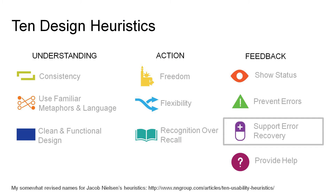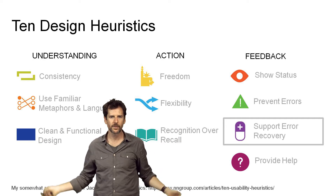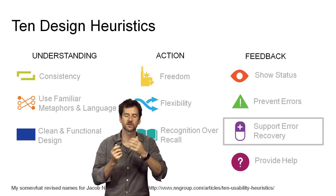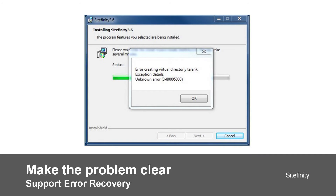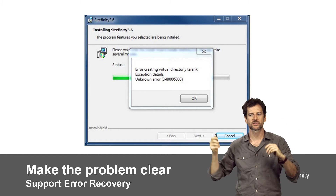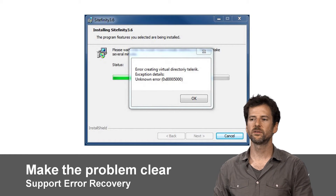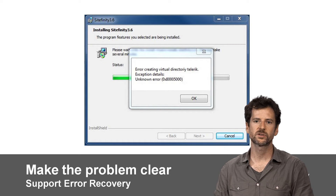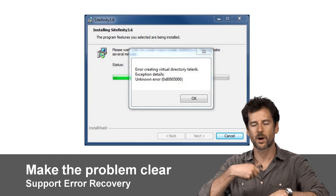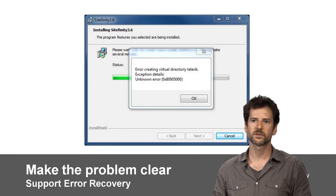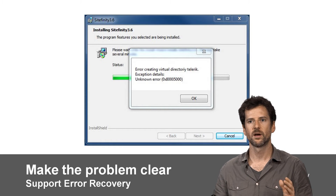Good user interface design and feedback can eliminate probably 90% of user errors or more, but there's no way to remove 100% of them. So when errors do happen, it's important to make the problem clear so you can help the user recover. Here's an error — 'error creating virtual directory' with an unknown hex error code — that in my opinion is not very helpful. It's slightly better than it looks because people have figured out you can type that hex code into Google to find information. But you could at least provide a hyperlink, and if we know what that hex code means, give an English language summary.